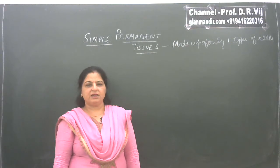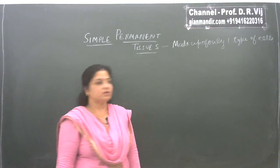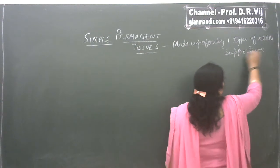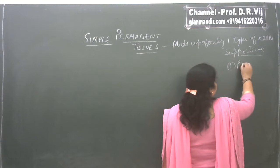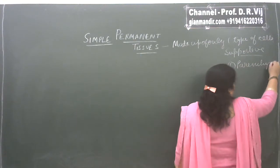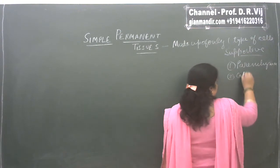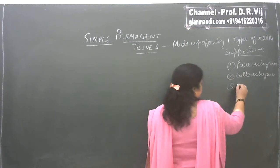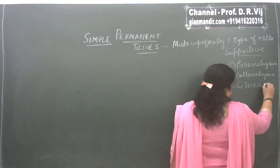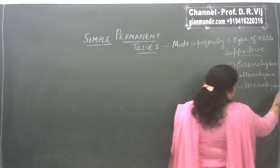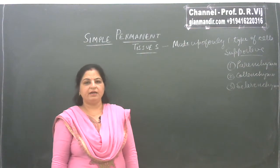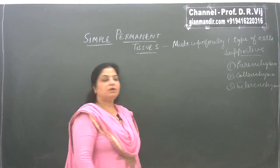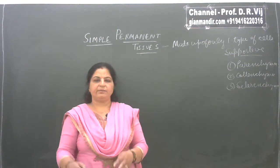Today in this lecture we will be discussing about the supportive type of permanent tissues. There are three supportive permanent tissues found in plants, and these are: parenchyma, colenchyma, and sclerenchyma. We will discuss the details of each here in this lecture. First of all, how are these permanent tissues formed?